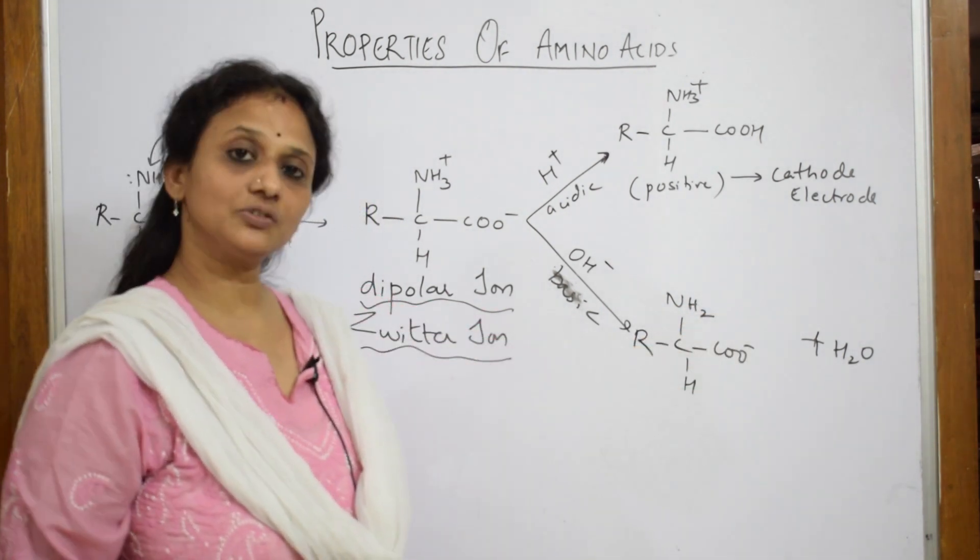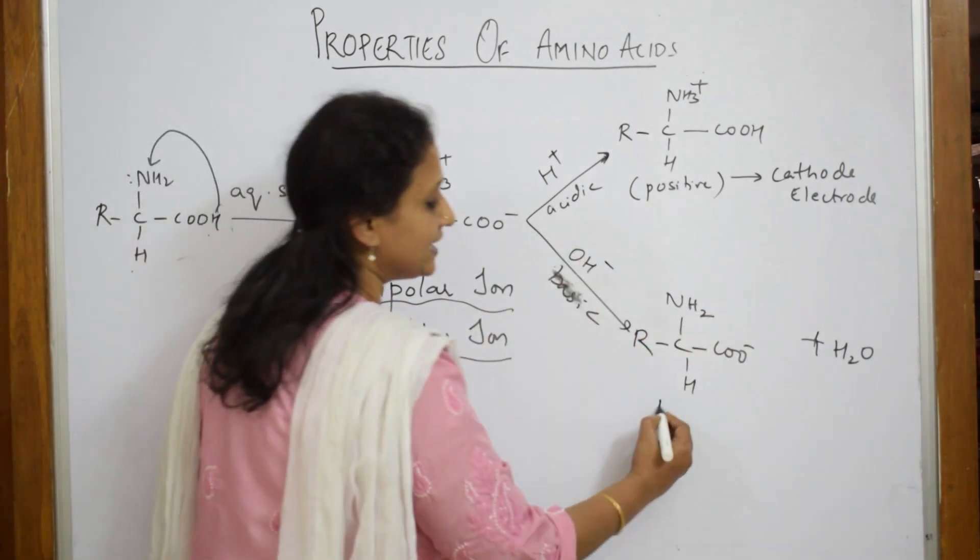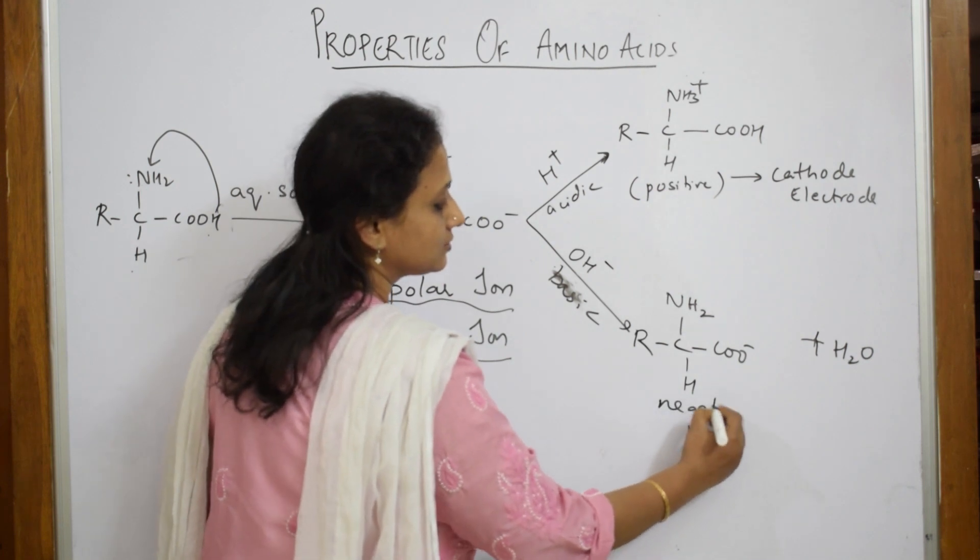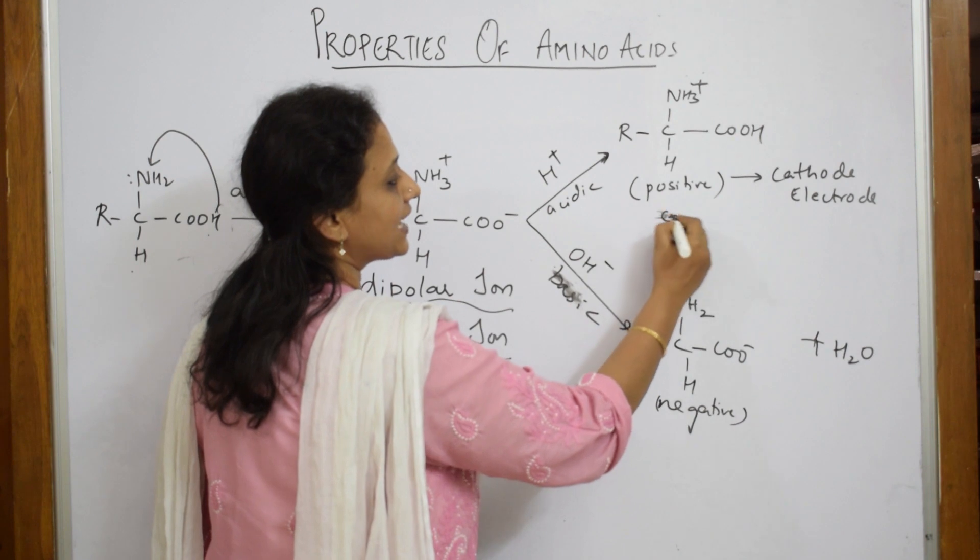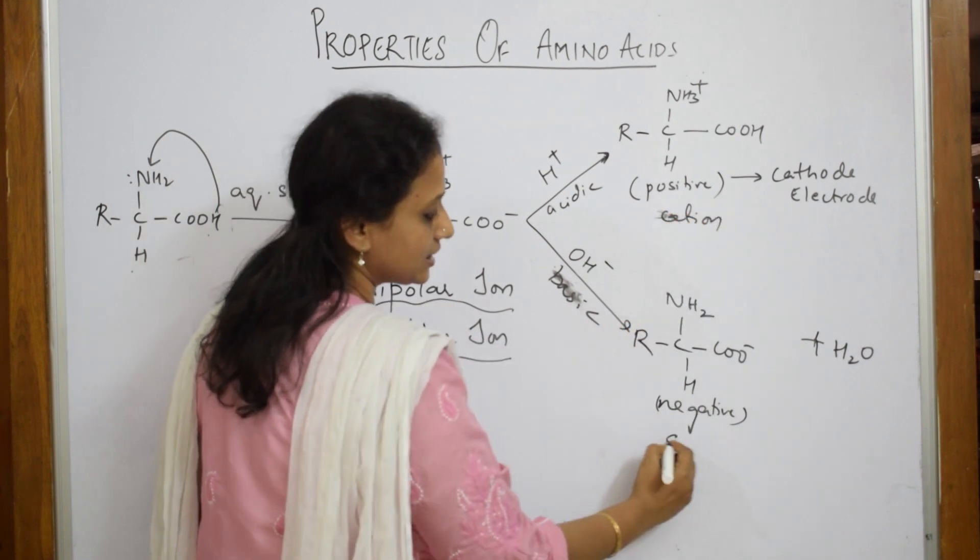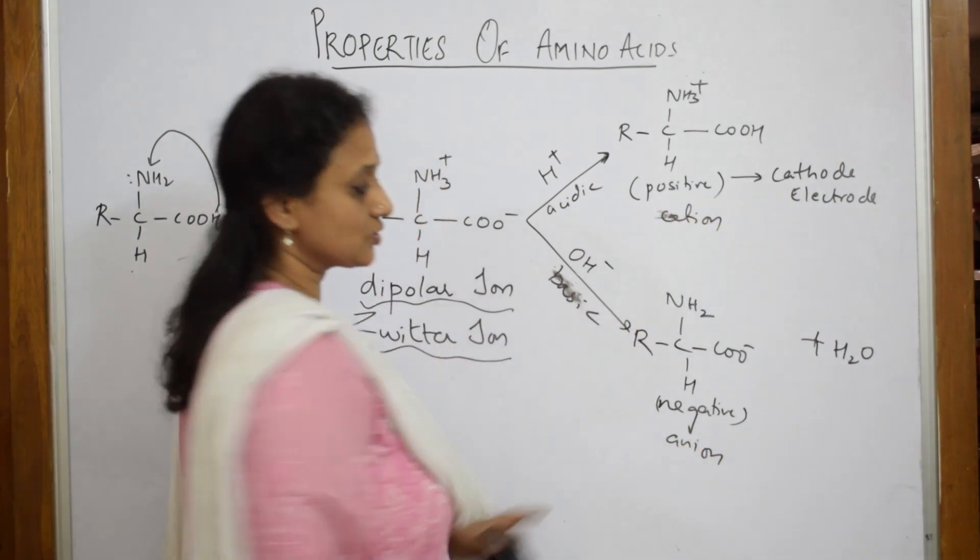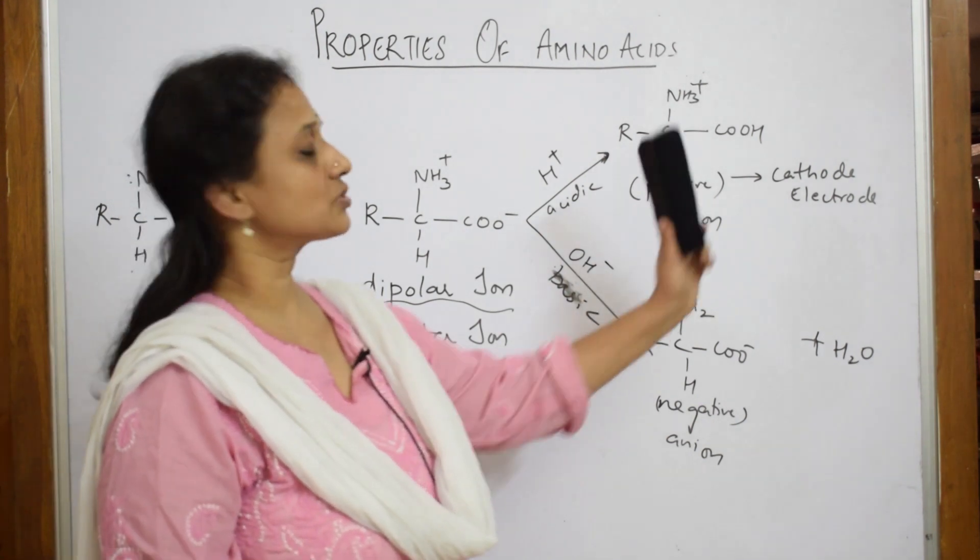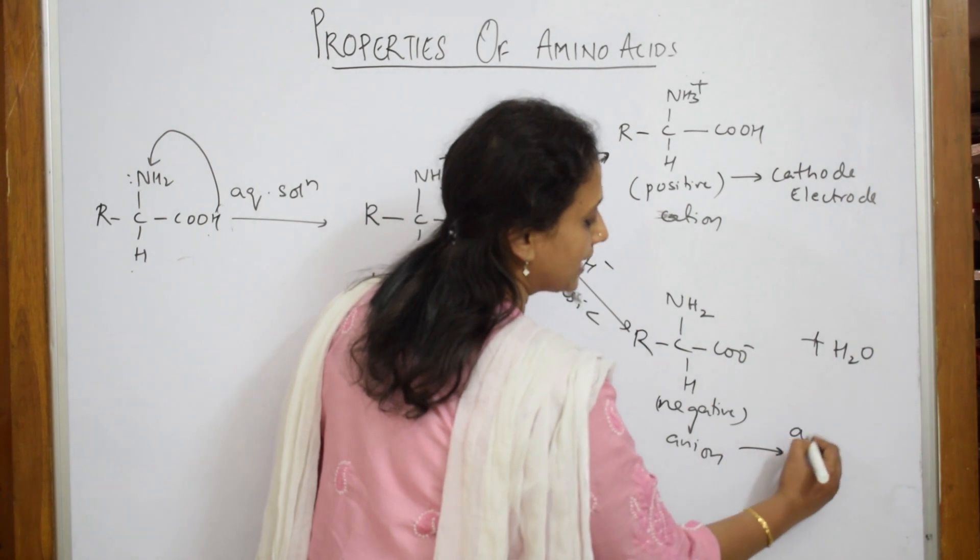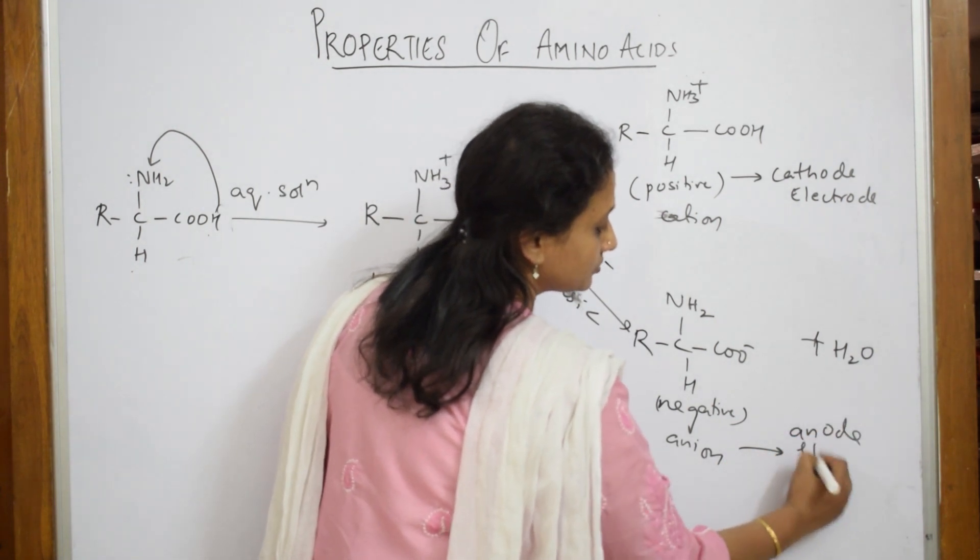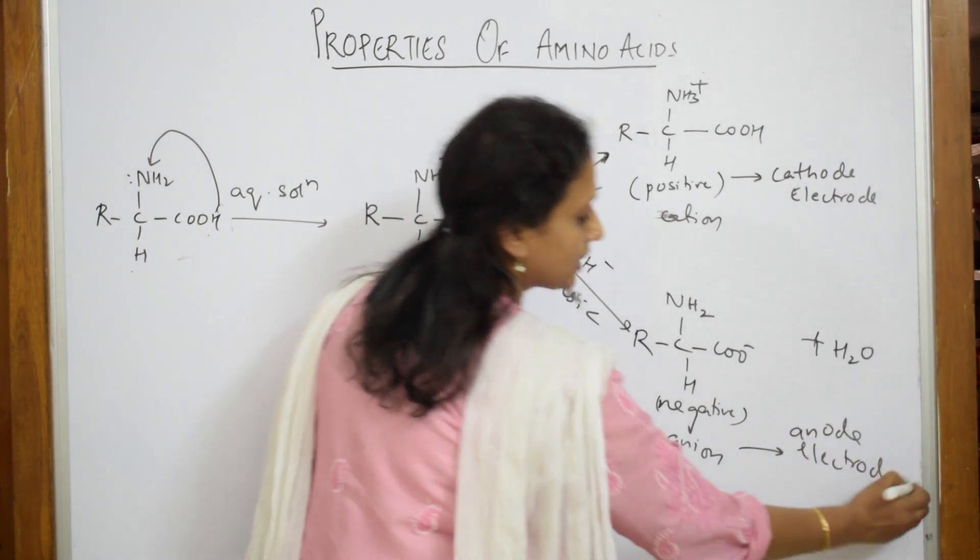Now what is the overall charge on that particular thing? It is negative. Here it is positive, so it is cation. Here it is negative, so it is anion. In electrophoresis, where will it go? When cation goes to cathode electrode, anion goes to anode electrode.